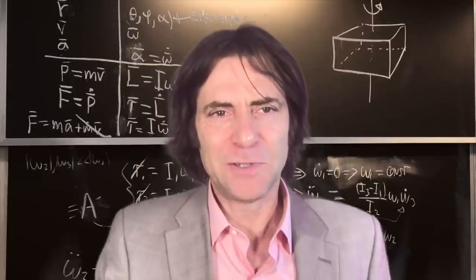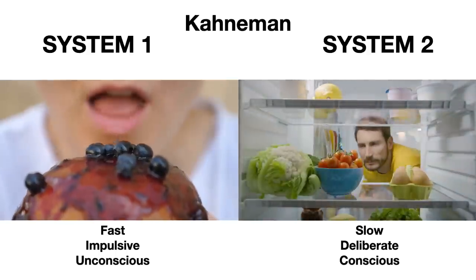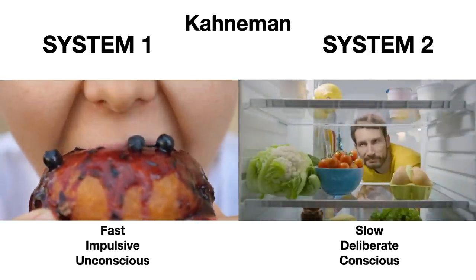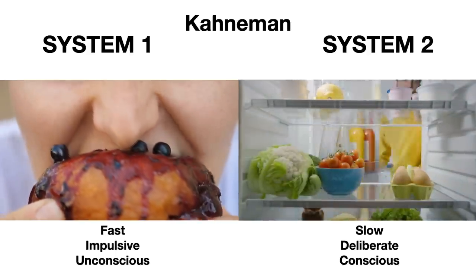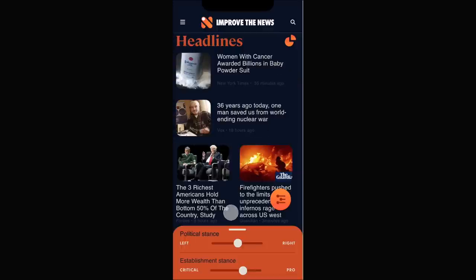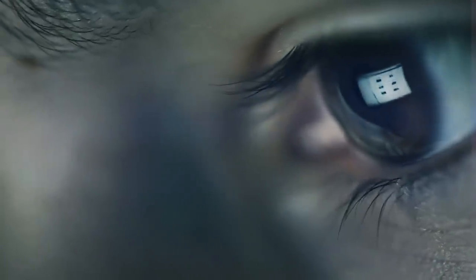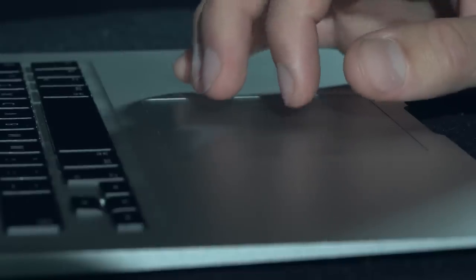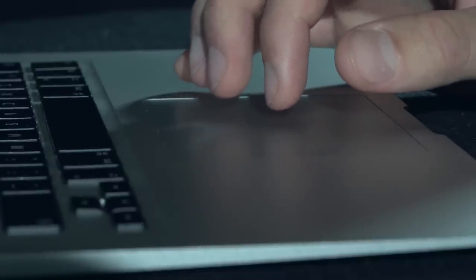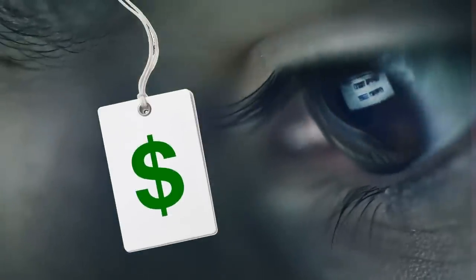Why is this useful for you? Improvethenews.org lets you choose your news diet the way you aim to choose your food — deliberately, not impulsively. This way, you'll read the news that are most important to you. Most other news sites instead focus on showing you whatever their algorithm thinks you'll impulse click on to maximize ad revenue. That's because they view your attention as their product to sell to their customers, their advertisers.